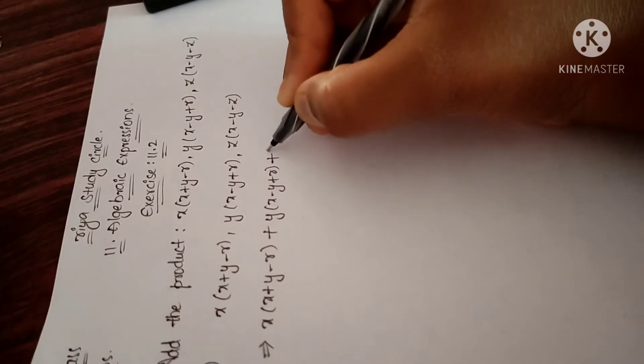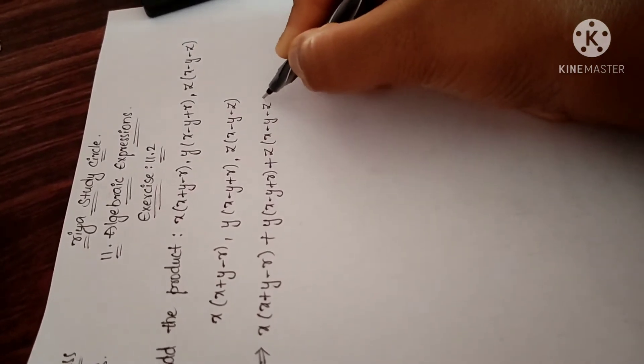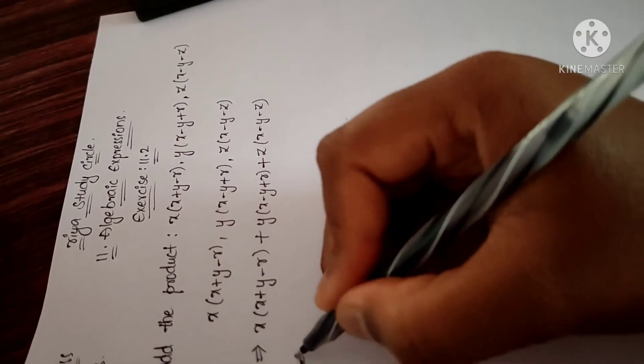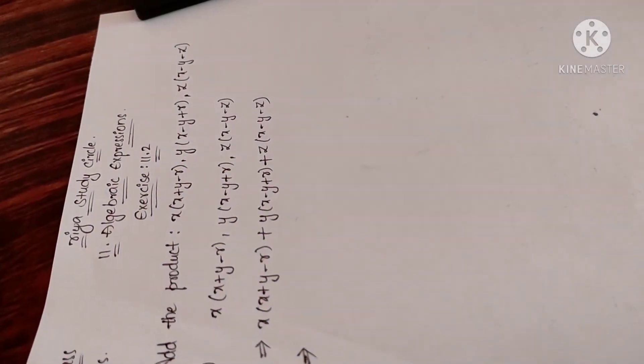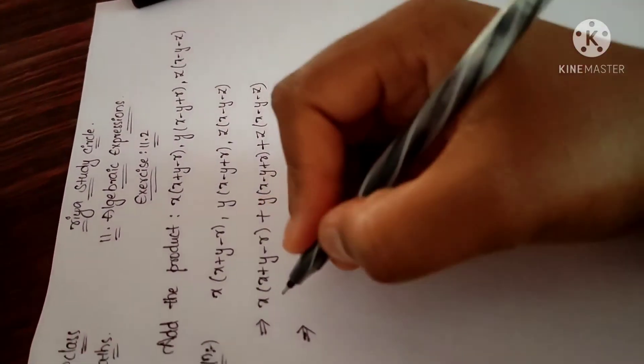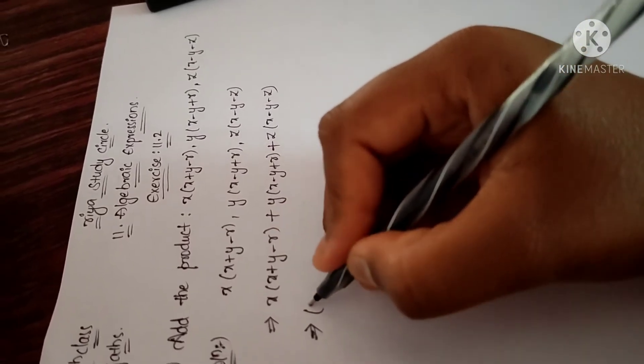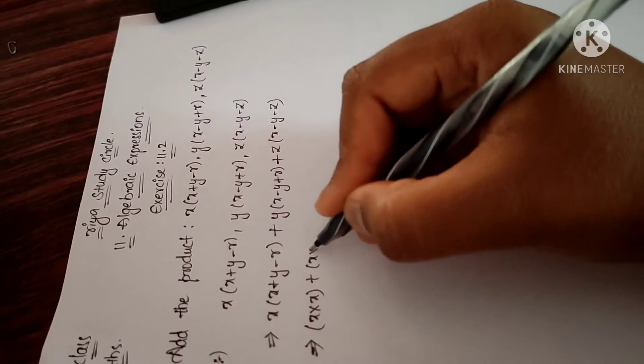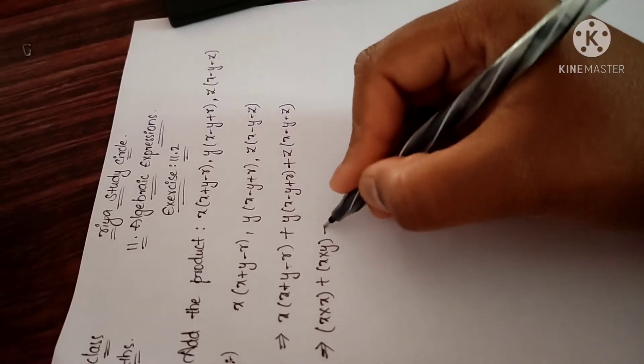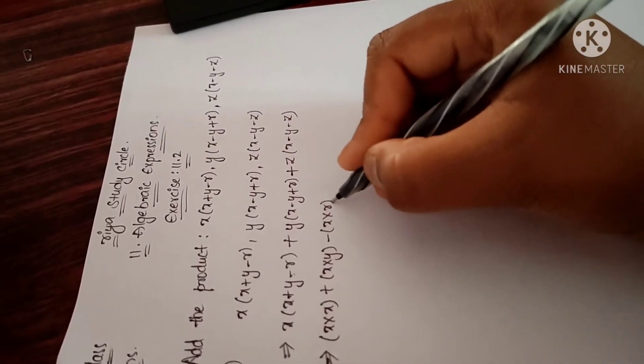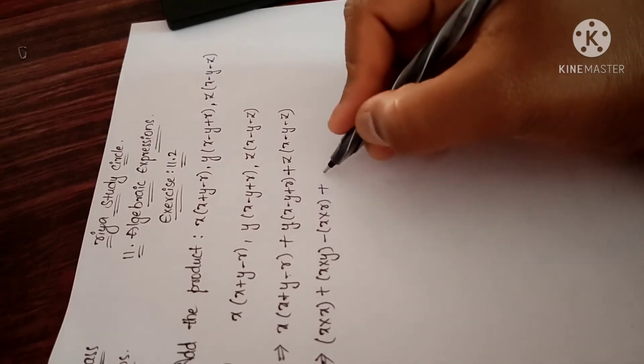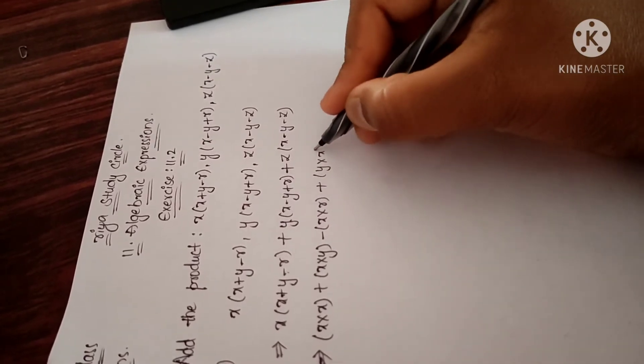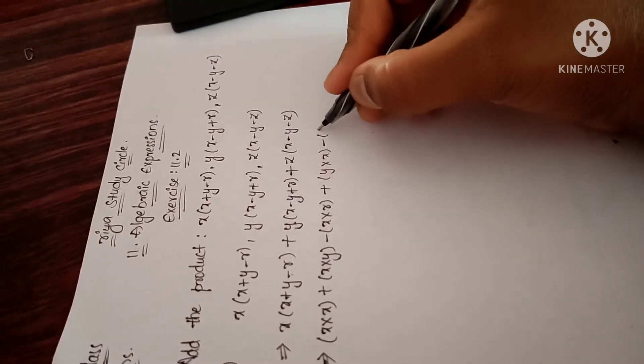Now we are using distributive law. That means x into x plus x into y minus x into r, plus y into x, plus into minus is minus, y into y.